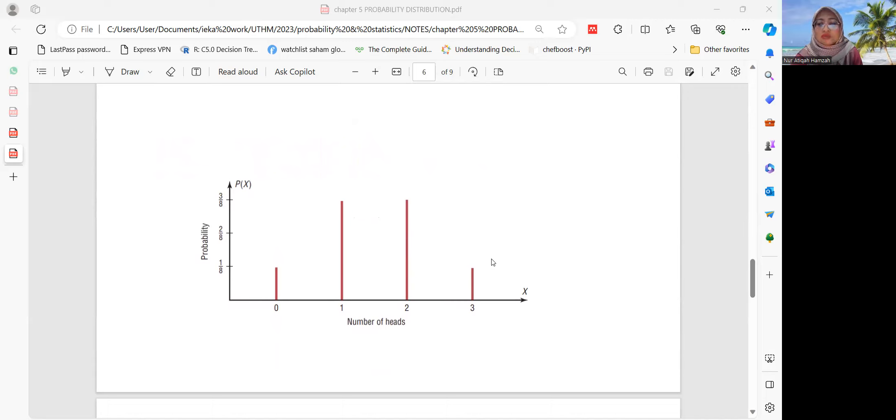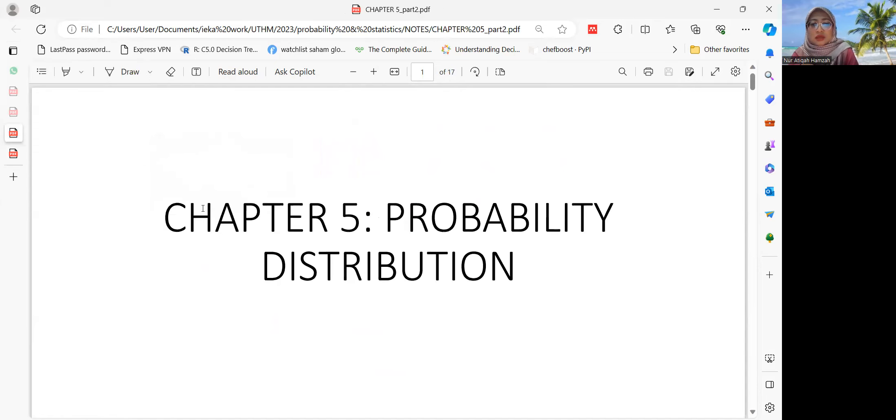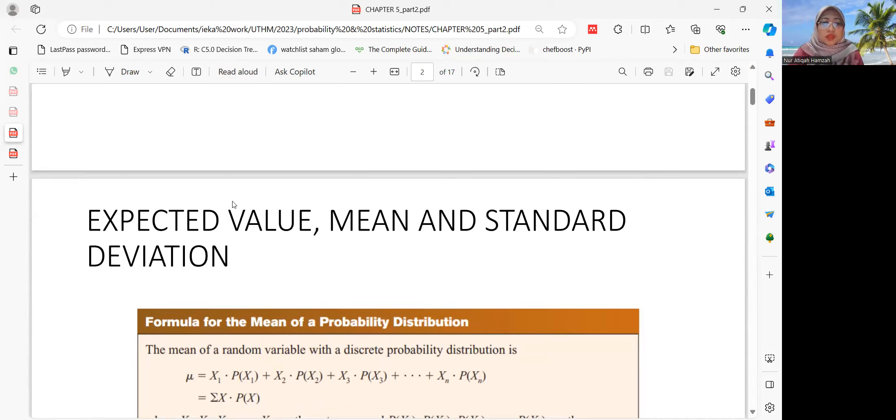And now for today we will continue the next part, which is how to find the mean, variance, standard deviation, and expected values for probability distribution. You can find this notes in order, chapter five part two. For probability distribution we can find all these things and there are specific formulas to find the means and the variance and also expected values.